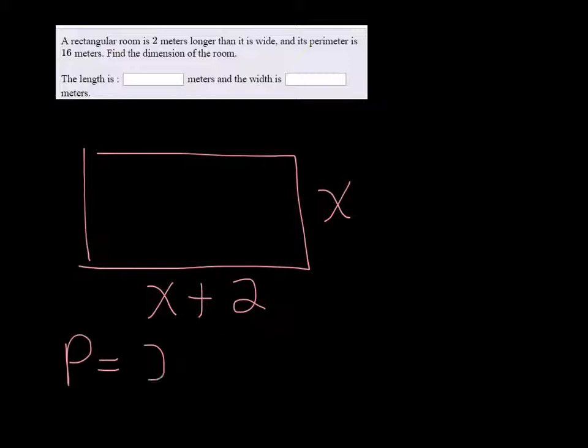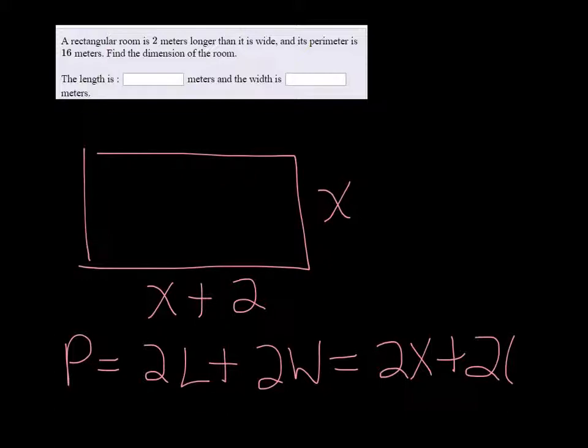The perimeter is equal to two times l plus two times width. So in our scenario that would be 2x plus 2 times x plus 2. So that's going to be 2x plus 2x plus 4.